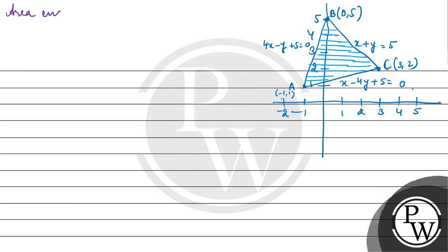Area enclosed is equal to, first the area under line BC, that is integral from 0 to 3 of 5 minus X, plus area under line AB, 4X plus 5 with X limits from -1 to 0, minus area under line AC, which is X plus 5 by 4, from -1 to 3.